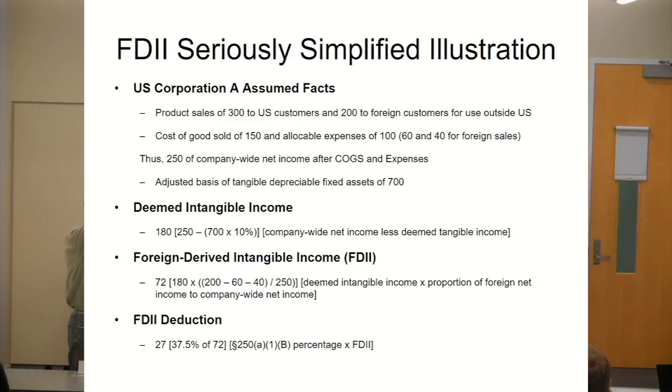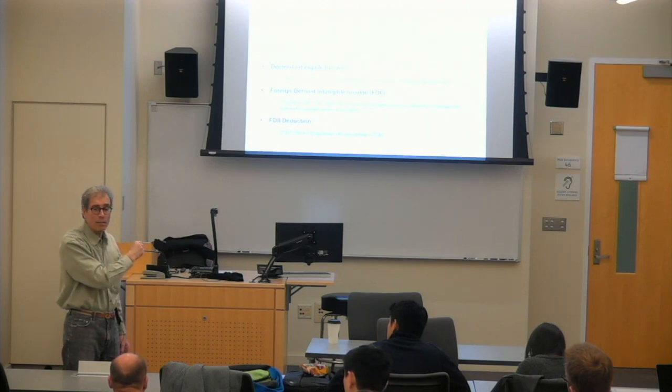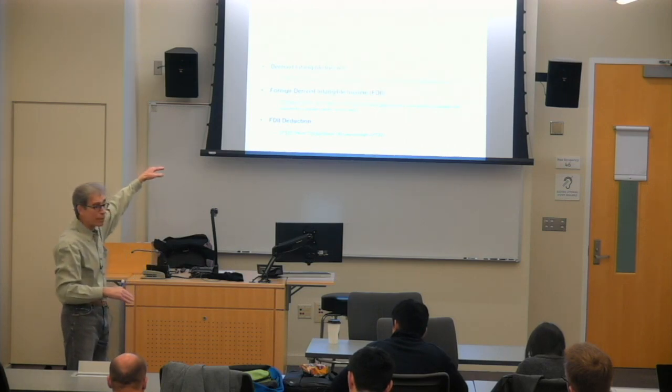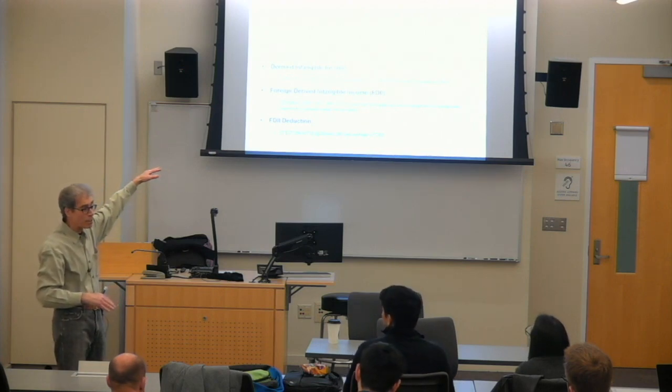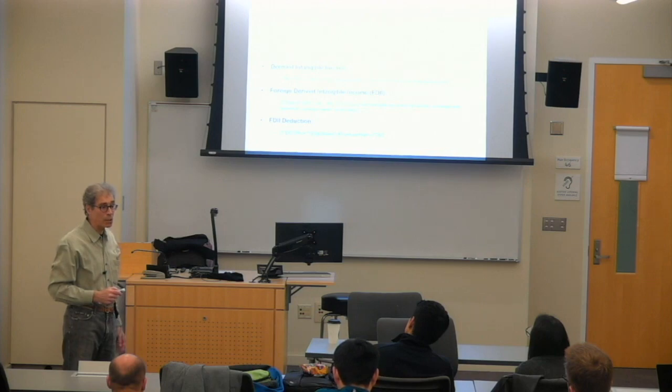Notice this subtraction of the deemed tangible income. The higher that is, the higher the subtraction, the higher the adjusted basis of your tangible assets, the lower the benefit is down at the bottom. So this is actually discouraging additional U.S. investment, in a manner of speaking, because to the extent you increase your tangible asset base, you're reducing the amount of your FDII deduction.